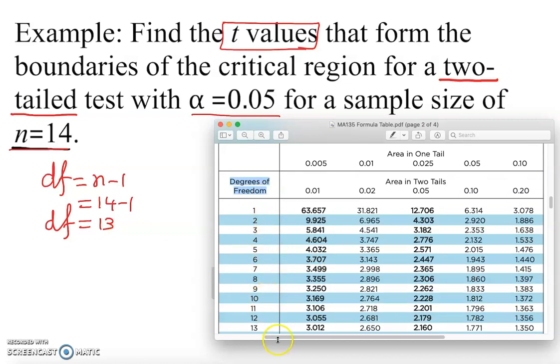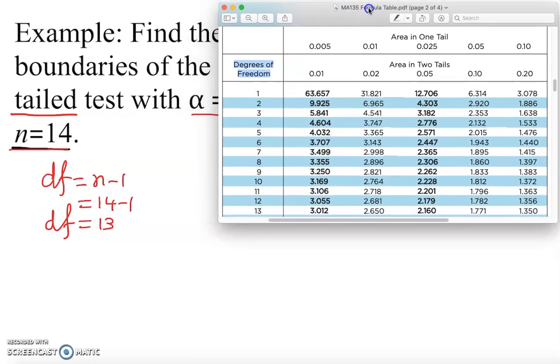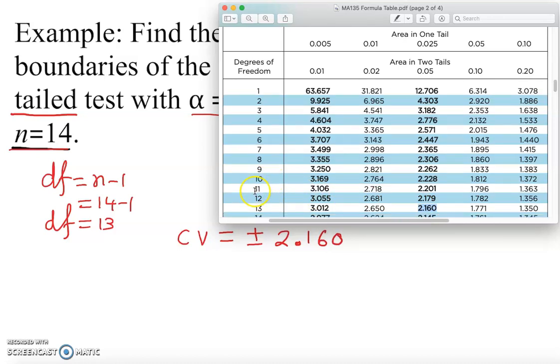So that's 13, and we come down here as you can clearly see. That's 13, and under the two-tail column. So our critical value is CV equals plus and minus 2.160. Why is it plus and minus? Because it's two-tailed.